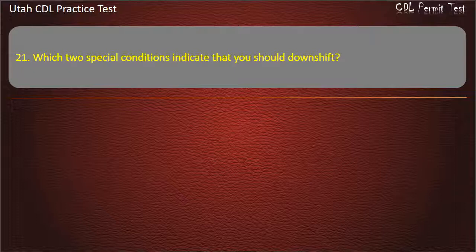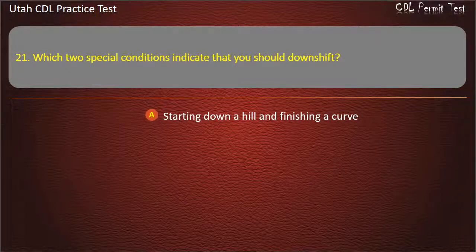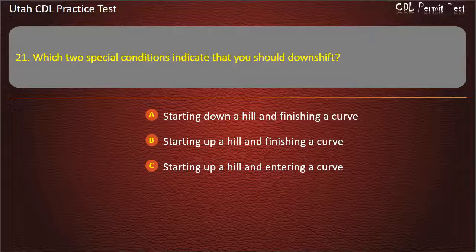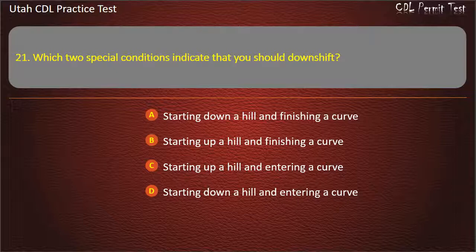Question 21. Which two special conditions indicate that you should downshift? Starting up a hill and finishing a curve. Starting up a hill and entering a curve. Answer: Starting down a hill and entering a curve.